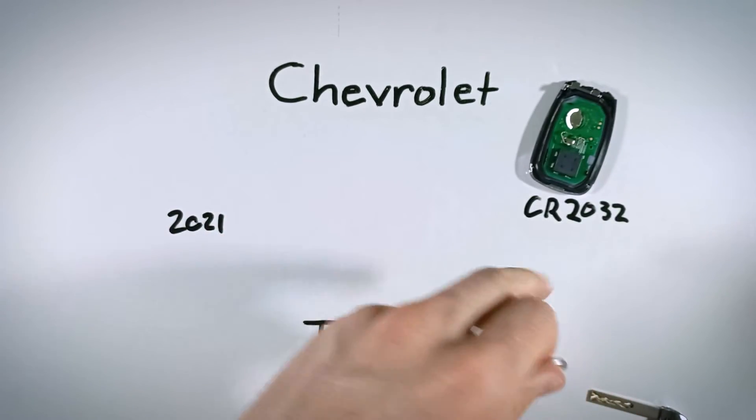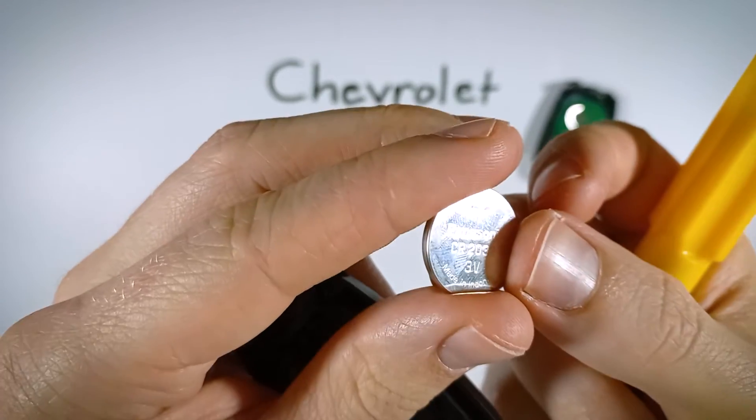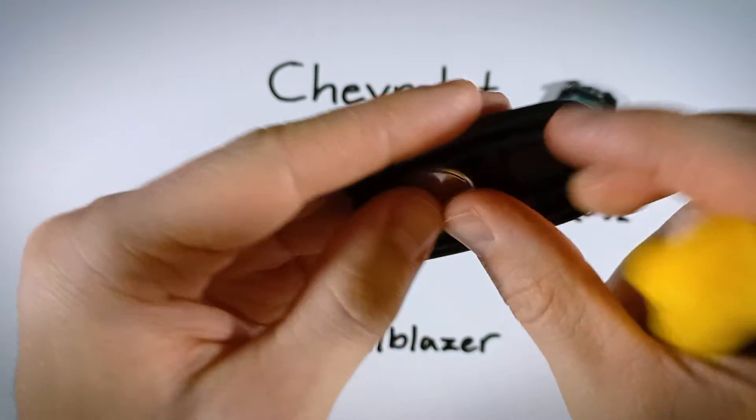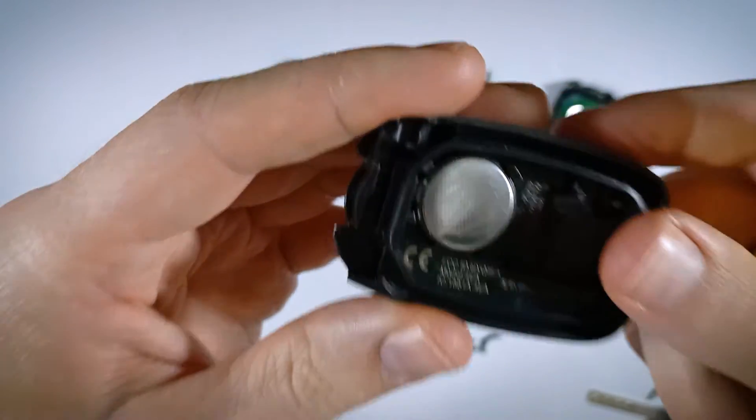Take your new CR2032 battery, and when you're putting it in, make sure that the positive side that has the plus sign on it is facing down. So you want to go and click that all the way in there so it's sitting flat, positive side down.